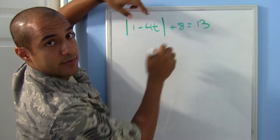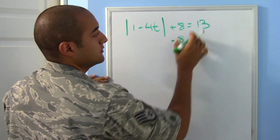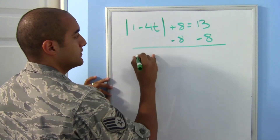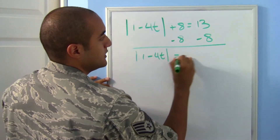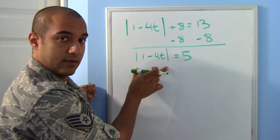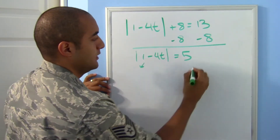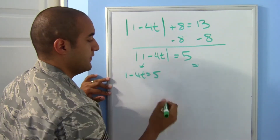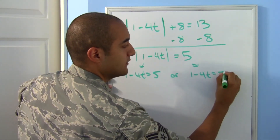We need to get rid of the plus 8, so subtract 8 from both sides. That gives us the absolute value of 1 minus 4t equals 5. Now that it's alone, we can do a split: 1 minus 4t equals positive 5, or 1 minus 4t equals negative 5.